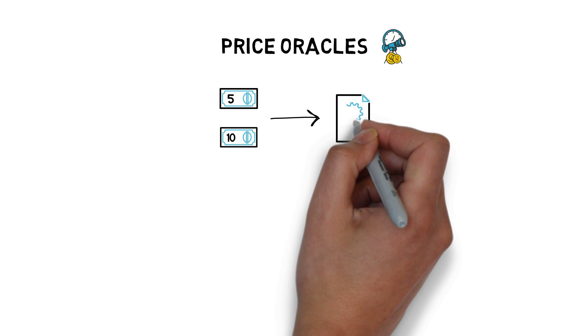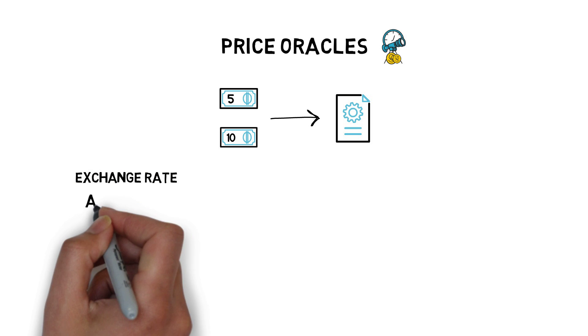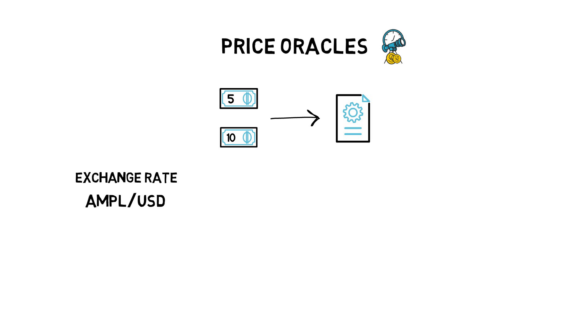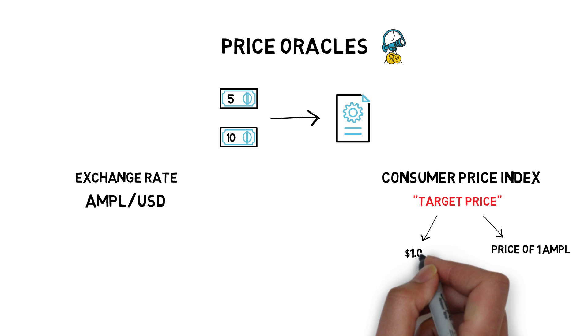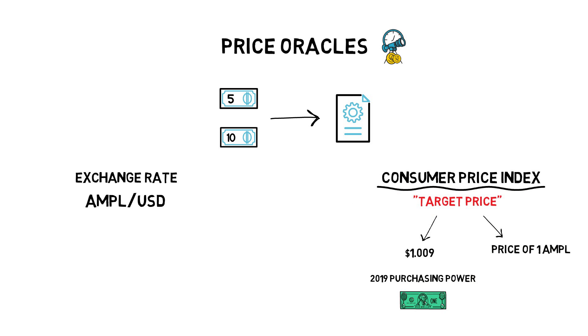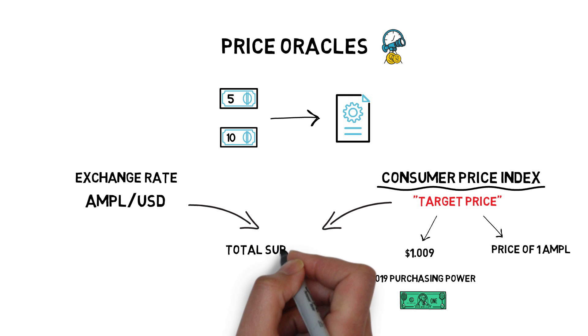Price oracles are used to provide external prices to smart contracts. There are two main functions of price oracles in Ampleforth. The first one is to provide a current exchange rate of Ample to US dollar. The second one is to provide a consumer price index value. The CPI is used to establish a target price, which is a price of one Ample that the Ampleforth protocol tries to aim for. The target price is currently at $1.009 and represents the 2019 purchasing power of the US dollar as represented by CPI. The target price plays a very important part of the protocol as it's used in conjunction with the current price to determine if there should be a change in the total supply of Ample.